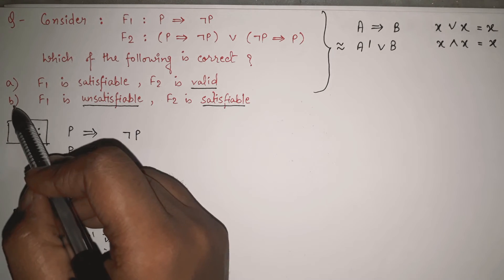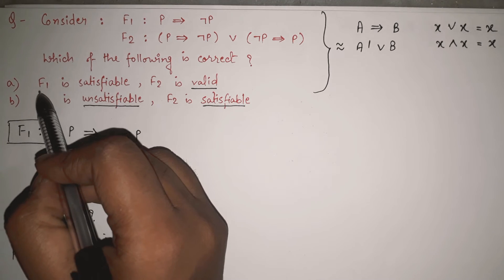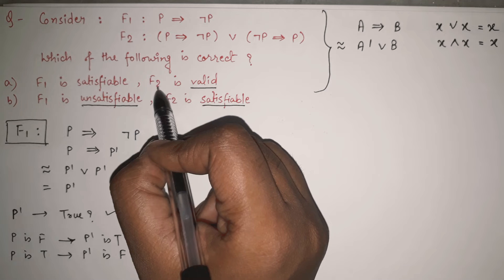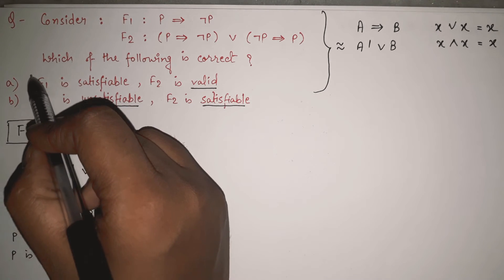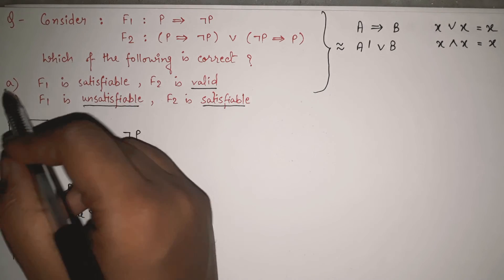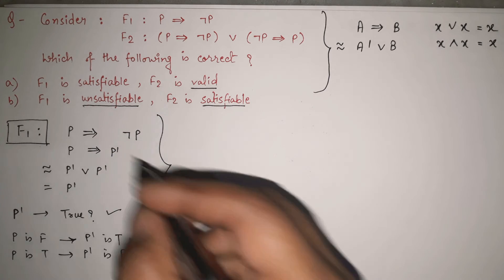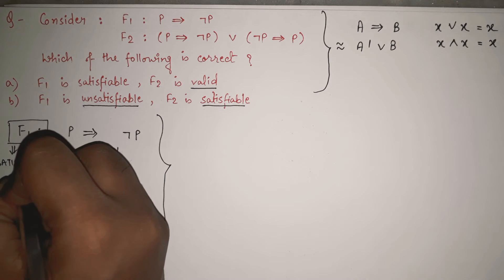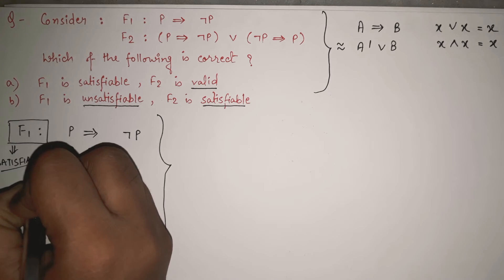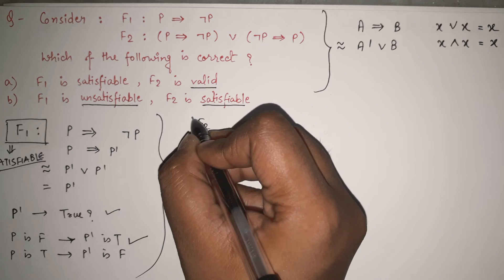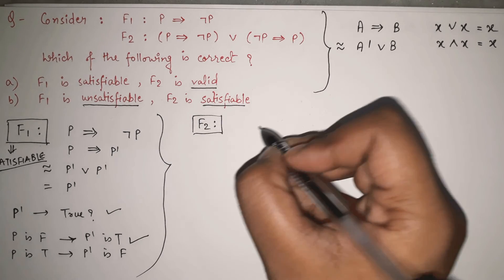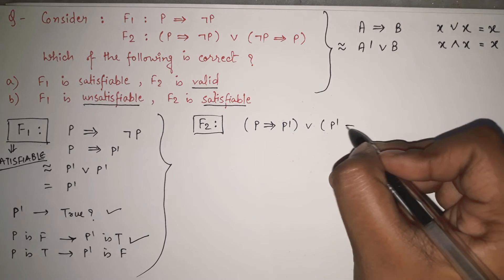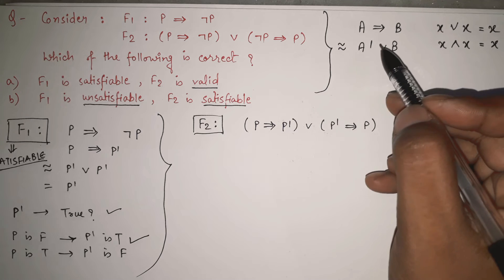What I can say is that F1 is satisfiable — it is not the case that F1 will always be true, and it is not the case that F1 cannot be true at all. F1 can be true in certain cases, so F1 is satisfiable. That is the first part correct for option A. Now let's check the second part. Let's try to simplify F2. What is F2? F2 is P implies P dash, or P dash implies P.